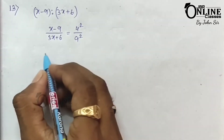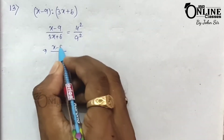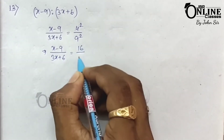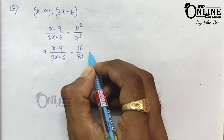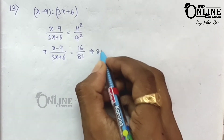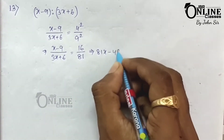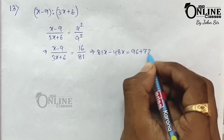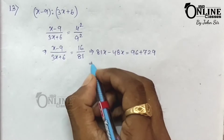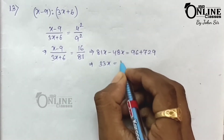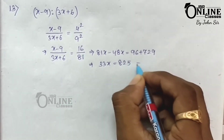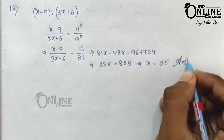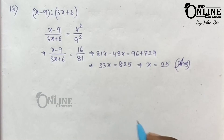We need to find the value of x. From the equation x minus 9 by 3x plus 6 equals 16 by 81, cross multiplying gives 81x minus 48x equals 96 plus 729. From that, 33x equals 825, and x equals 25. That is the answer.